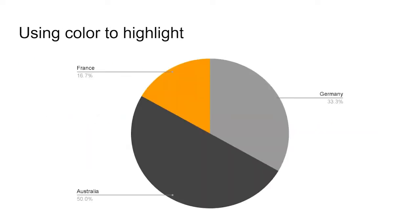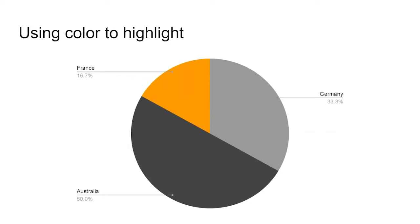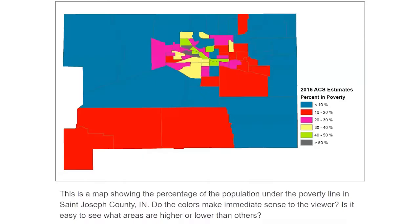The color or colors you choose can be used to highlight a particular data point or group of data points. But it is important when doing this to work with predefined color meanings instead of against them, such as using blue for water bodies instead of purple. And when using a color scale, make sure that you choose the correct one for the type of data that you're displaying and the message you want to get across.